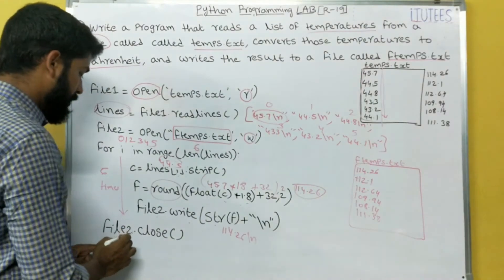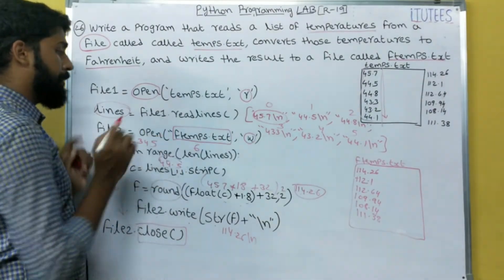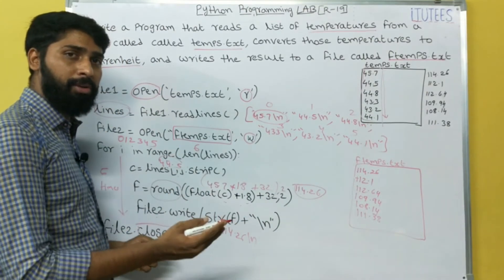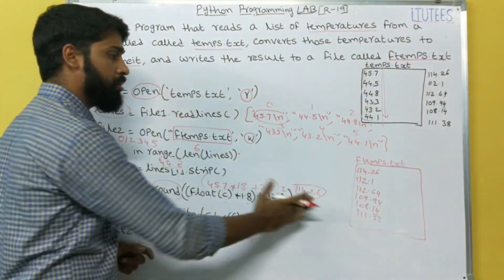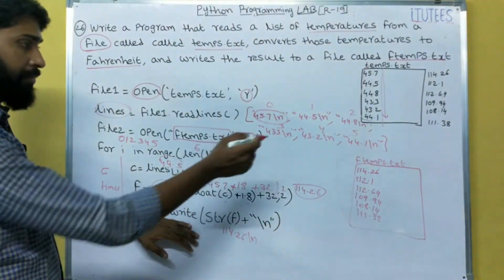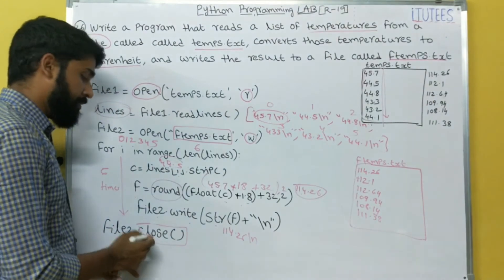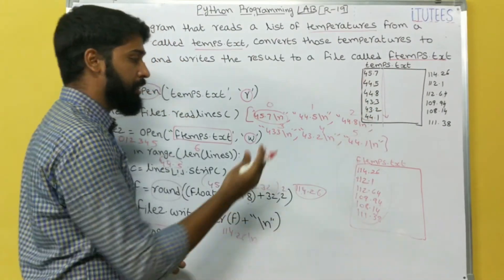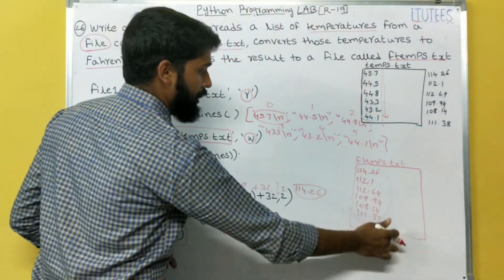After that, file2.close() — this is important. Initially you are opening a file that is in primary memory. A file is nothing but storing information on secondary memory. All these operations are done at primary memory. Now we store these values onto secondary memory. If you do not call close(), the file is created but it will be empty. So file2.close() means all the changes are saved to the original file on secondary storage. That means ftemps.txt will contain these converted values.